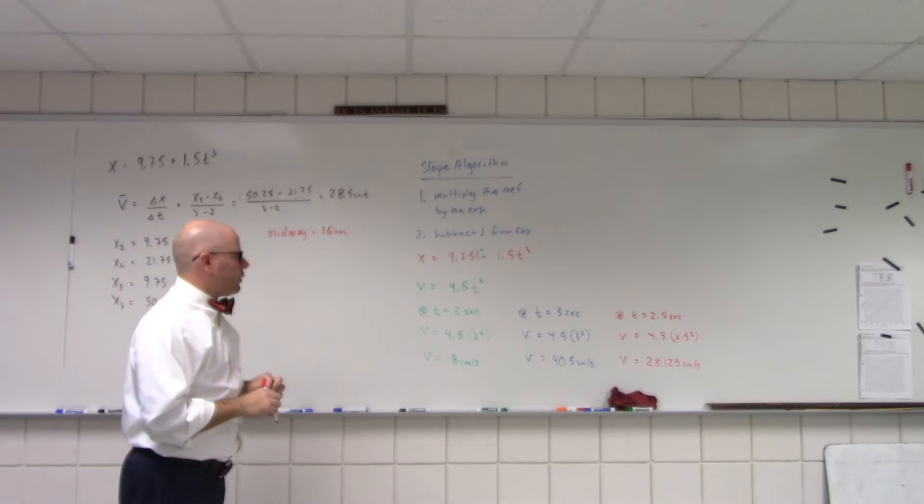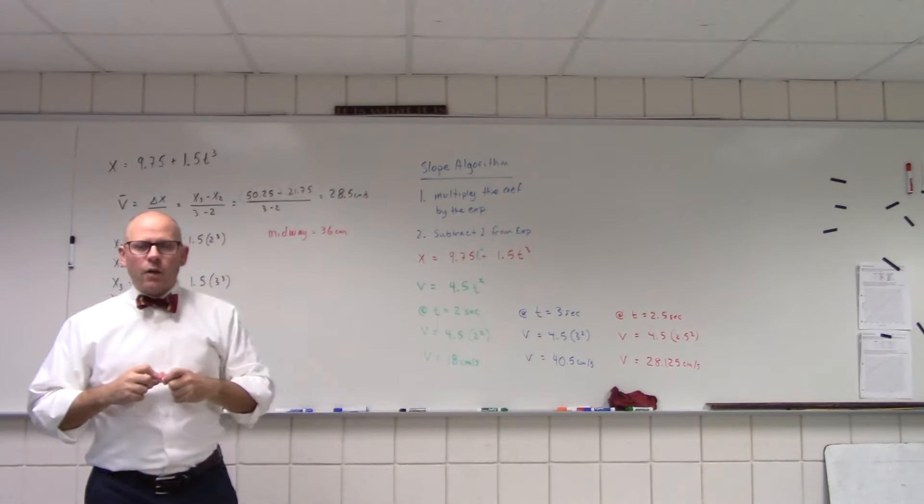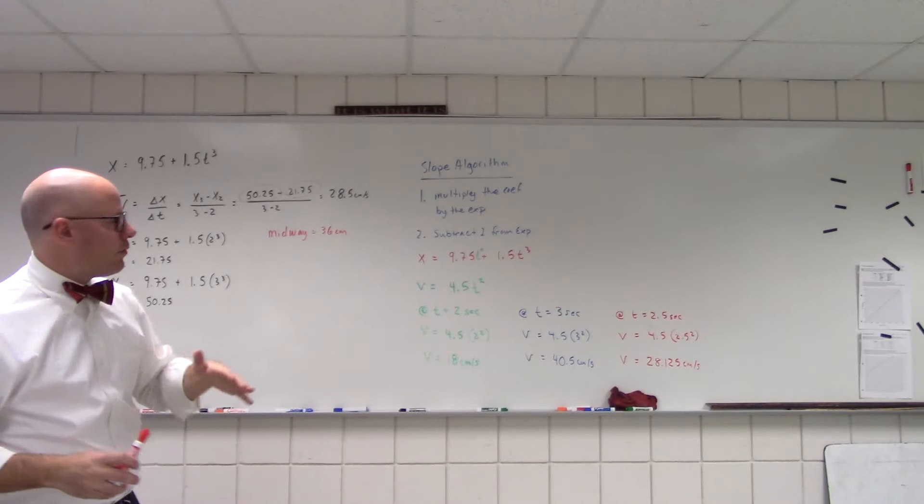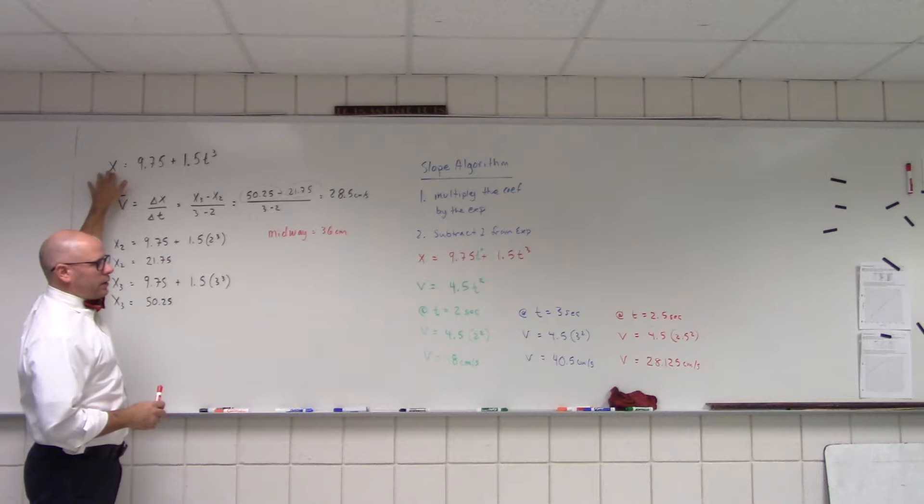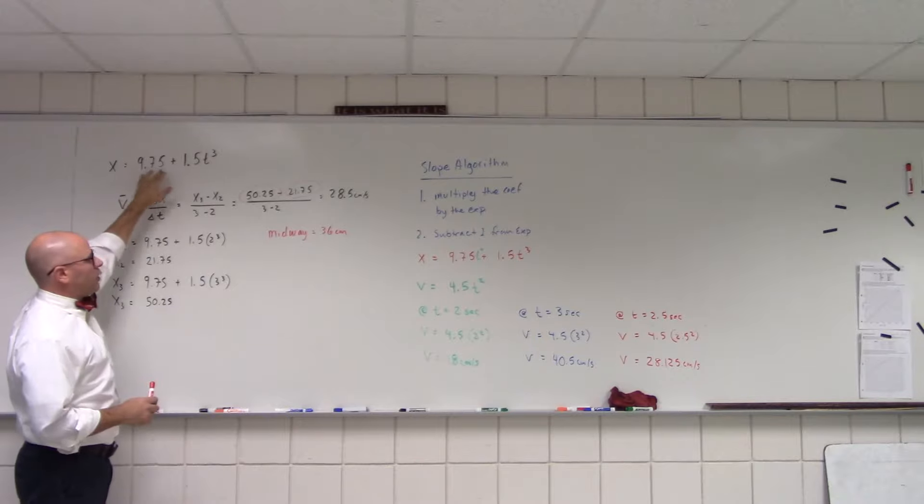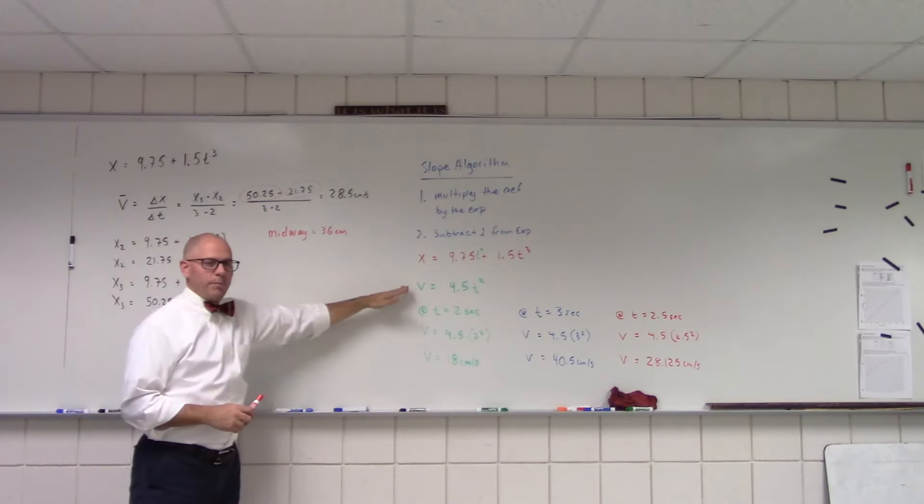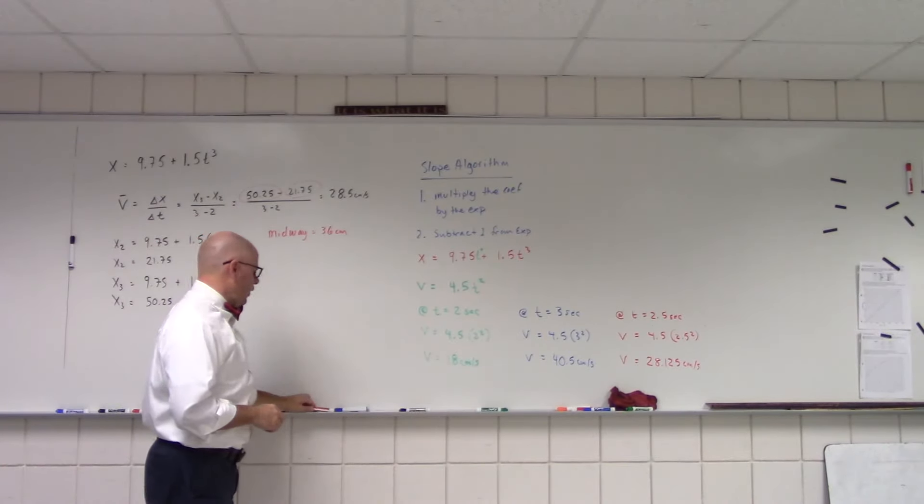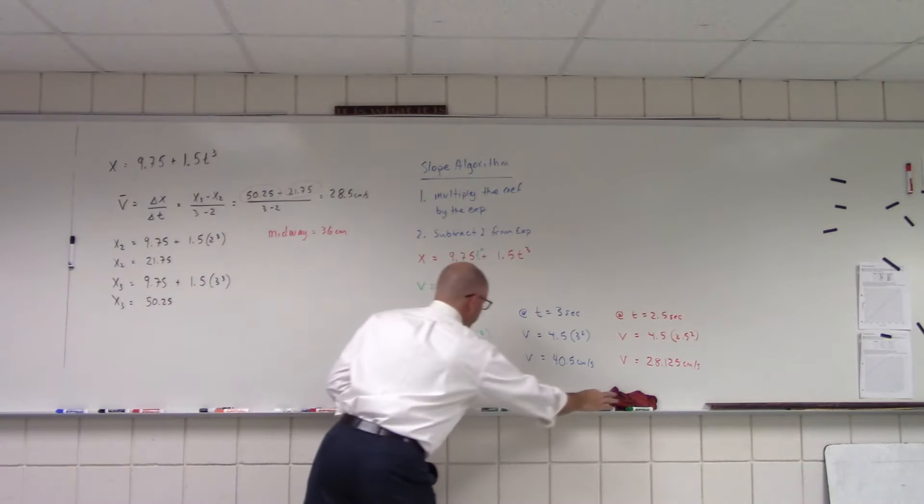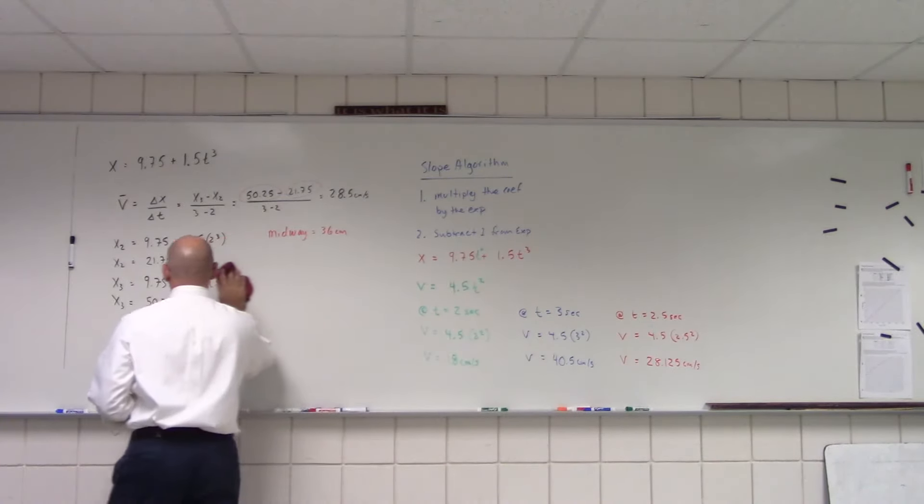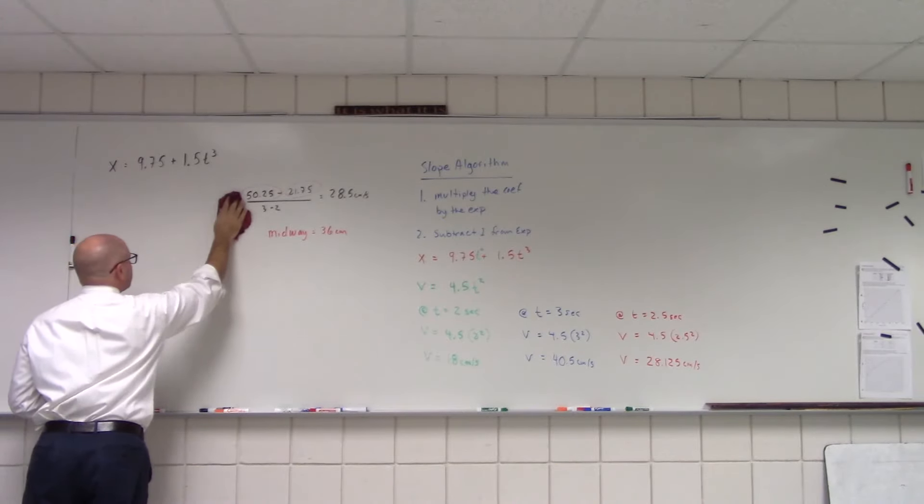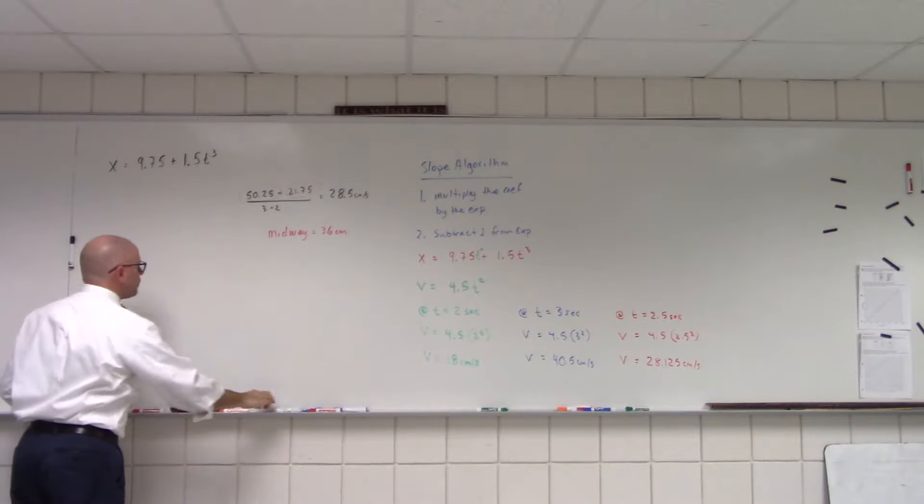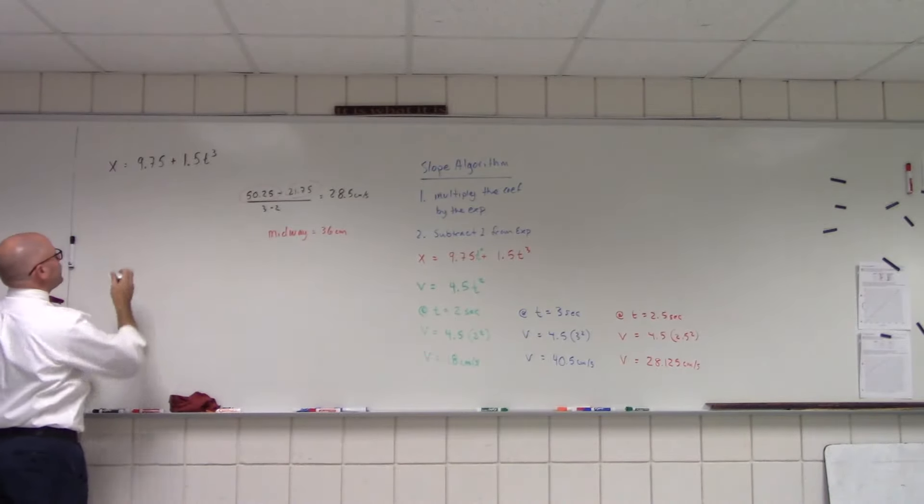So, now what we have to do is we have to do something a little interesting. We need to figure out, well, what was the time? What was the time when the position was 36? We're going to get that time and we're going to put it back into here. So, let's see if we can't do that using this function.